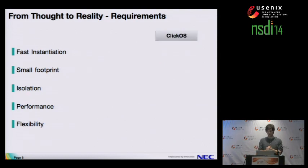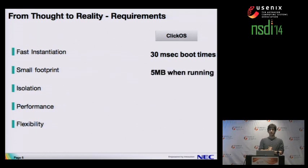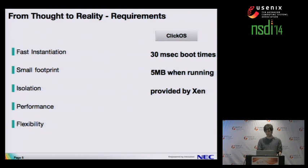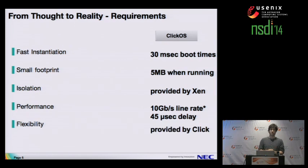With ClickOS, we fulfill all of these requirements. We boot in as little as 30 milliseconds, so end hosts don't even notice. It only requires just five megabytes when running. Isolation is provided out of the box by Xen. It achieves 10 gigabit line rate for almost all packet sizes, and adds as little as 45 microseconds of delay. And using Click modular routers provides a lot of existing packet processing elements.